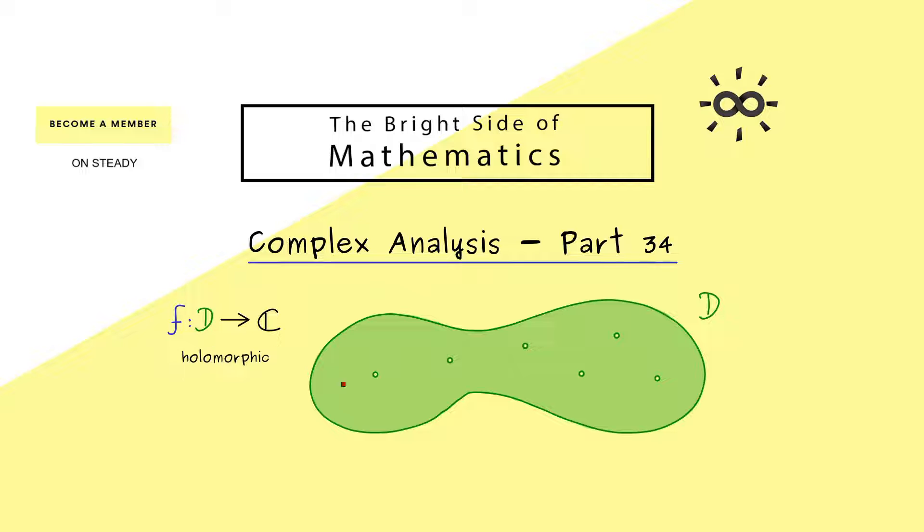And now we simply find some isolated singularities for our function f. And here you already know for each singularity we have a well defined residue. In order to define this we simply choose a small circle around the singularity.